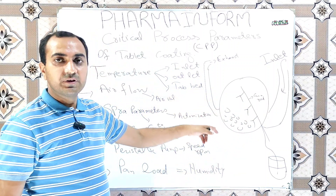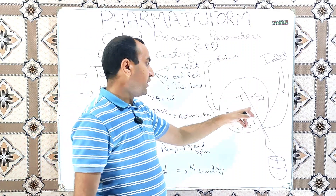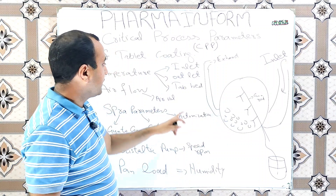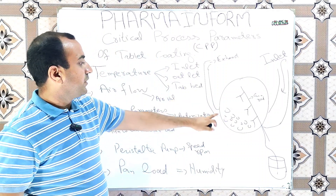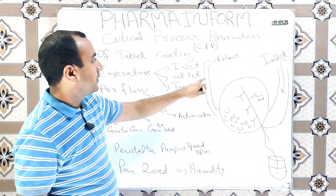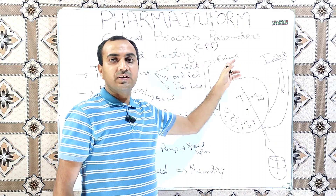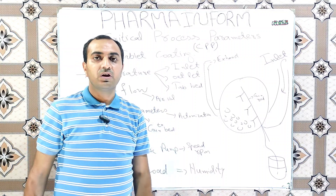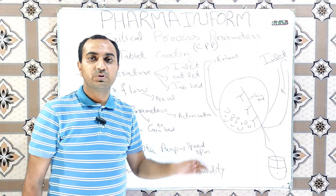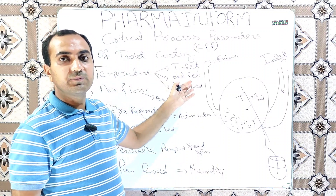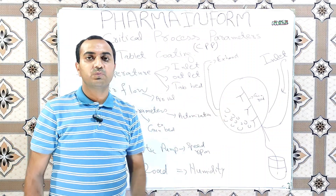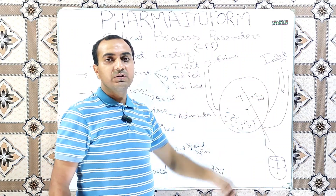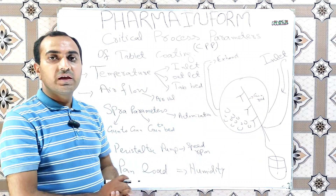When inlet air comes inside the coating pan it gives its heat to the tablets and warms them. Due to this heat our solvent is evaporated, and the temperature of the tablets is known as tablet bed temperature. When this air leaves the coating pan and goes outside through the exhaust, the temperature of that air is known as exhaust air temperature or outlet air temperature. Monitoring all three types of temperature is very critical to ensure a smooth coating process.